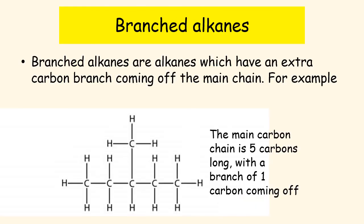The situation gets a little more complicated because an alkane doesn't have to be a straight line — it can have what we call branches. This is where, off our main chain, we have an extra carbon atom coming off the chain. In the diagram at the bottom, if we count along a straight line of carbons, there are five carbons in that chain, and then one additional carbon coming off the third carbon. That's what we call a branched alkane.